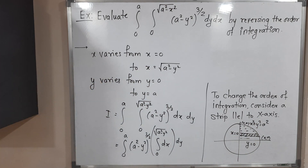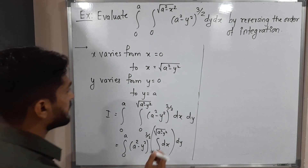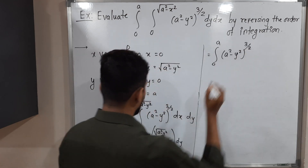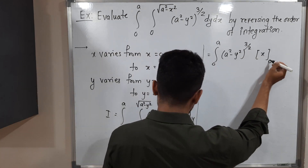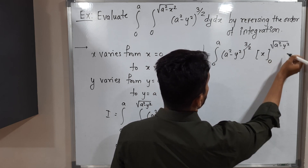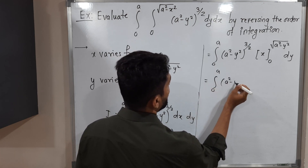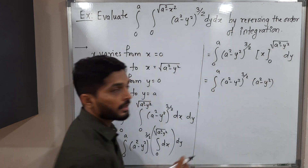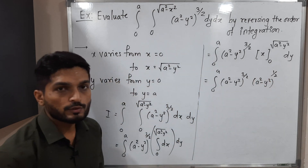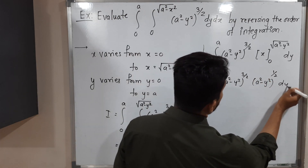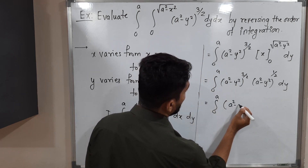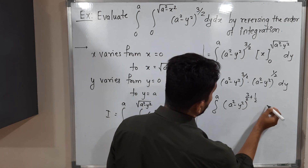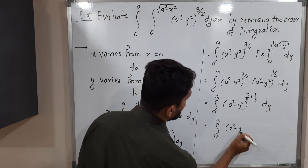So the expression becomes the integral from 0 to a of (a²−y²)^(3/2) times [x] evaluated from 0 to √(a²−y²) dy. Substituting the upper limit gives x=√(a²−y²)=(a²−y²)^(1/2), and the lower limit gives 0. Since we have the same bracket, we can add the powers: 3/2+1/2=2, giving the integral from 0 to a of (a²−y²)² dy.